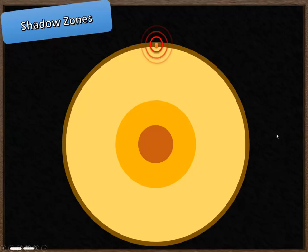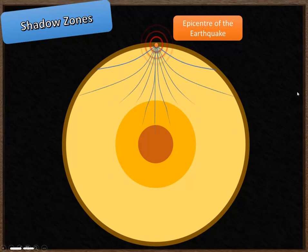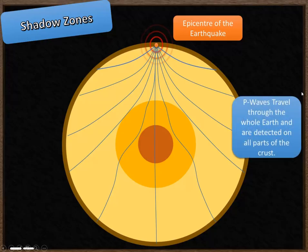We're going to now look at what a shadow zone is. Marked on this diagram of the Earth is the epicentre of our earthquake, and from there, the two types of earthquake wave are going to be emitted. The first type of wave that's sent out is the P wave. The P wave travels through the whole Earth and is picked up by detectors all the way around the Earth.